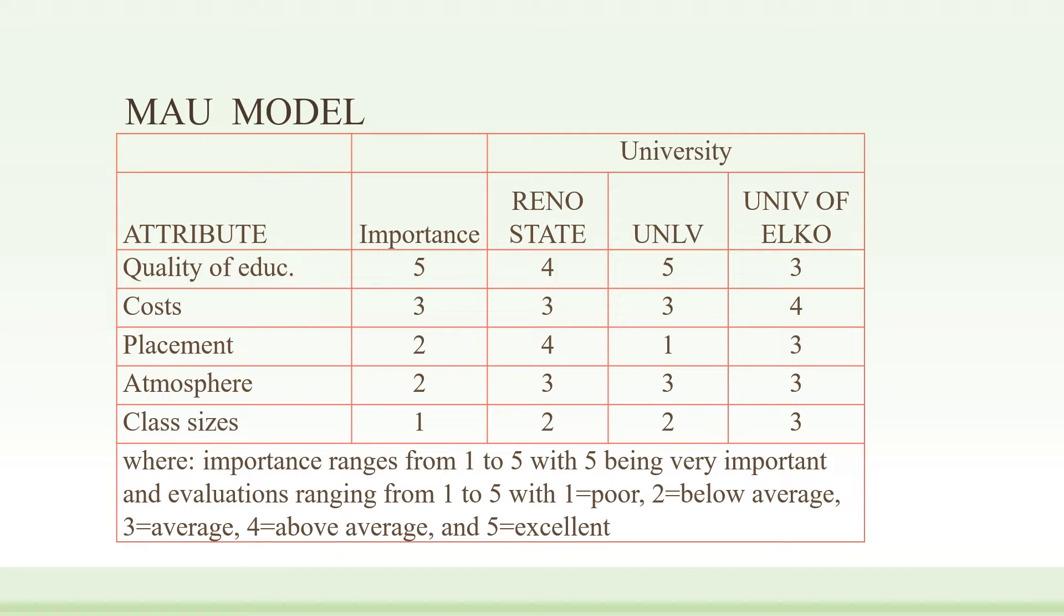We asked students to tell us on a scale of one to five, where five is very important and one is not important at all, how important each of these attributes are. As you might expect, quality of education was the most important attribute, followed by costs at three out of five, followed by placement and atmosphere, both at two out of five. Finally, class size was the least important of these attributes.